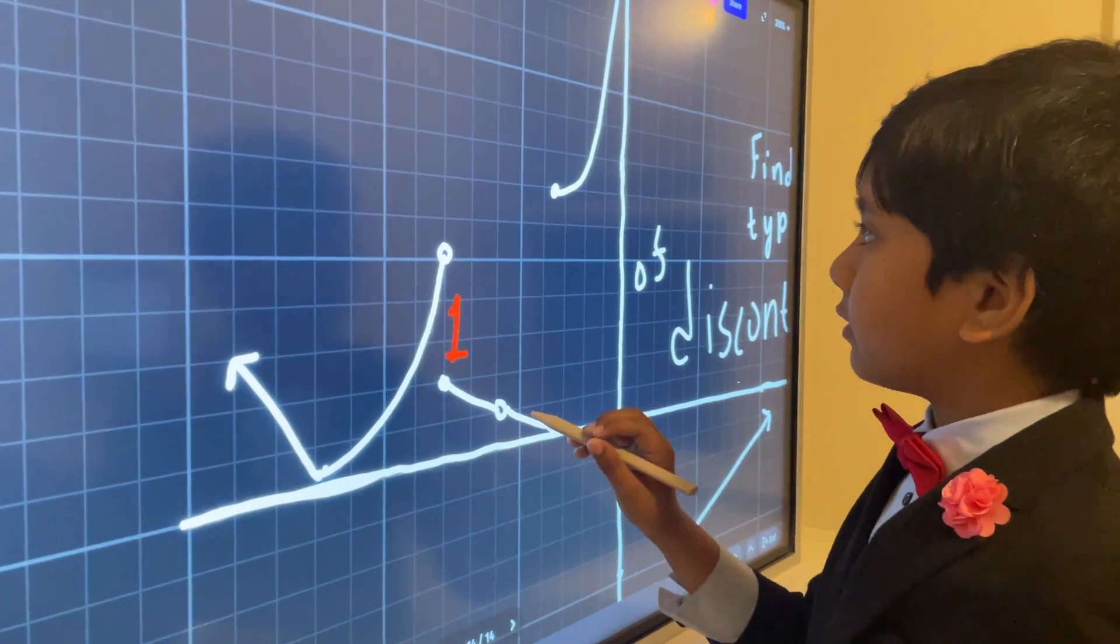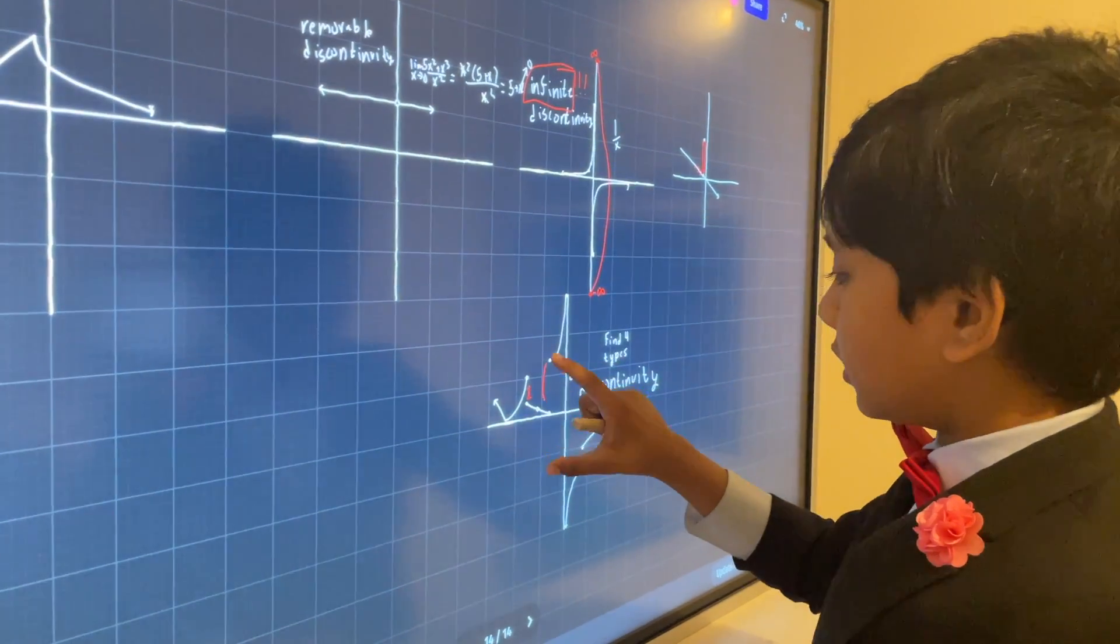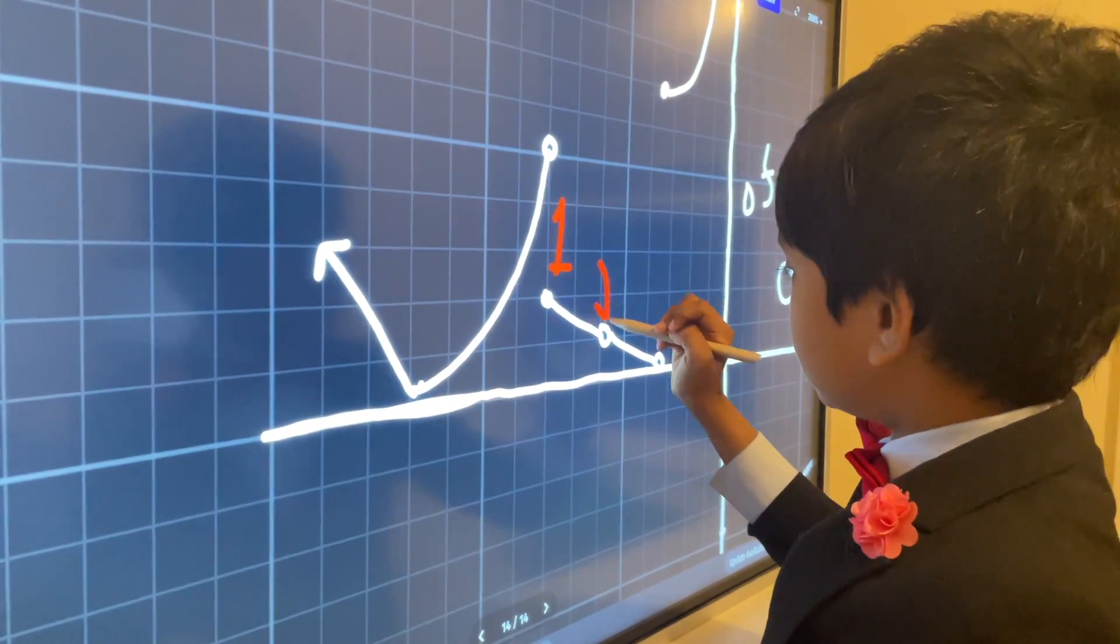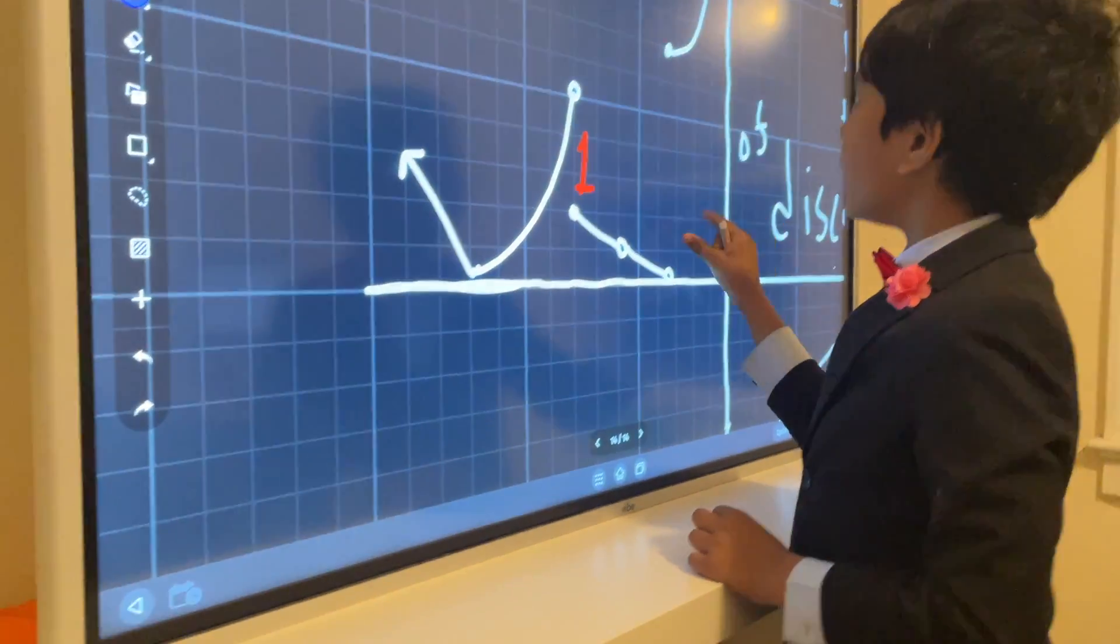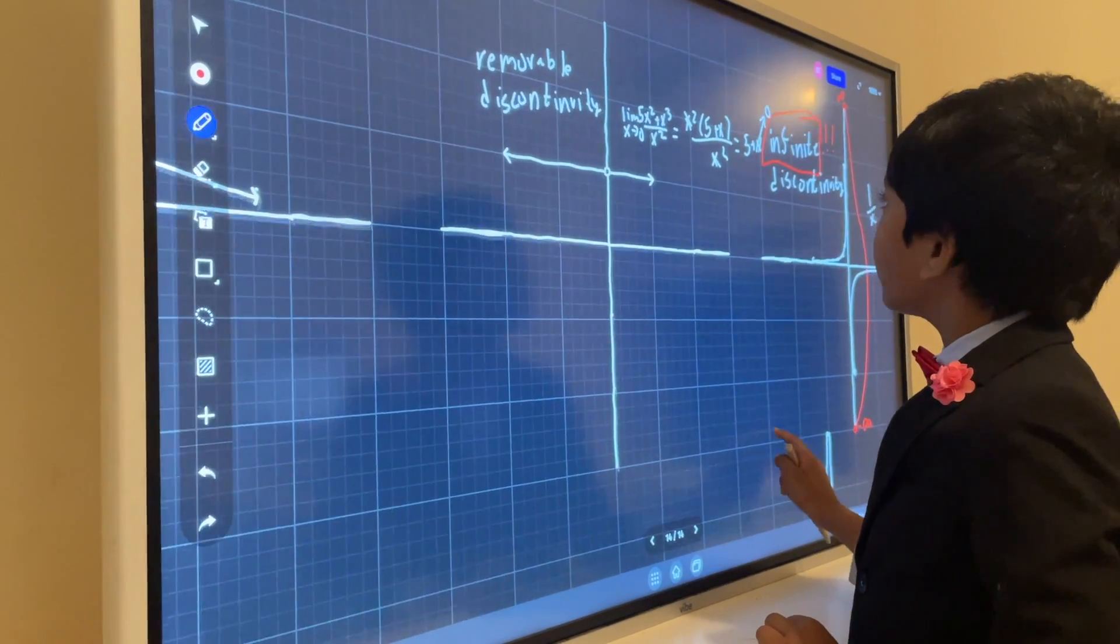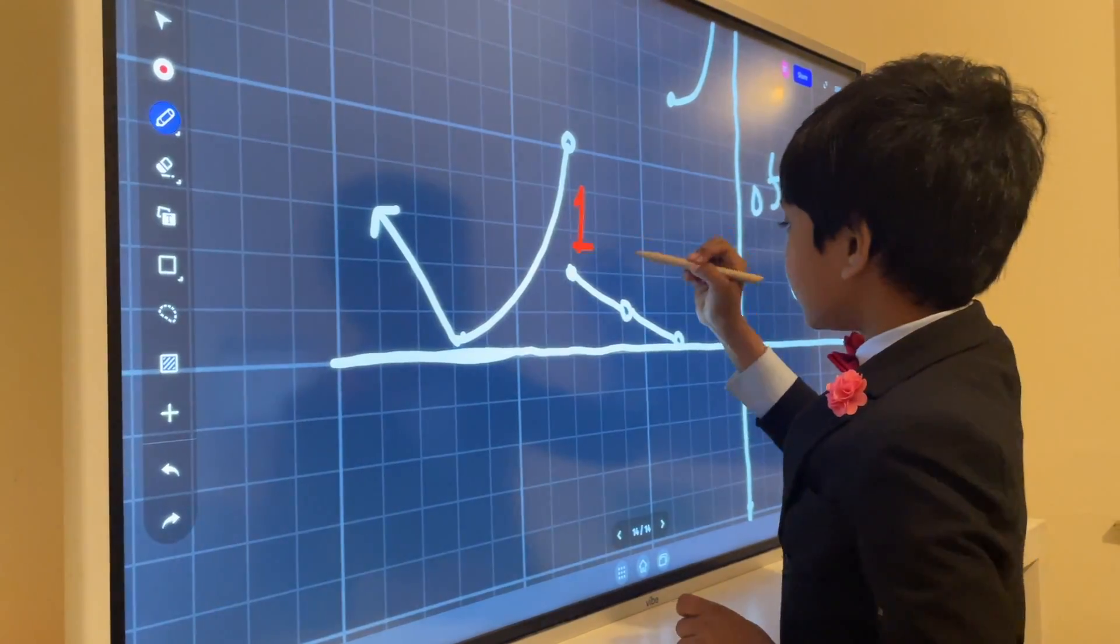Then what about this? Well, it's a removable discontinuity. Why? Well, because it's really just standing there. You can remove it from the function. So I think that would be two, right? Yeah, that's number two. So this is two.